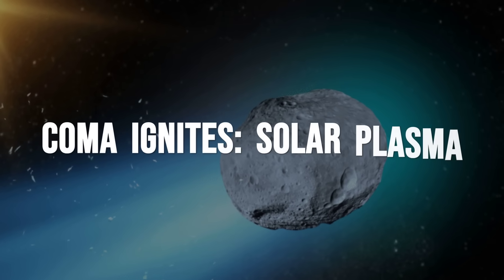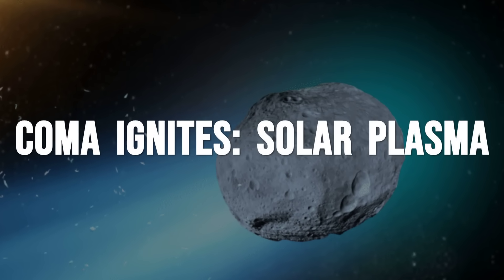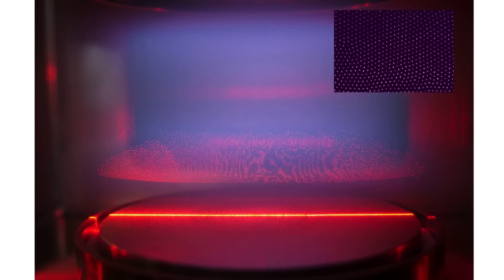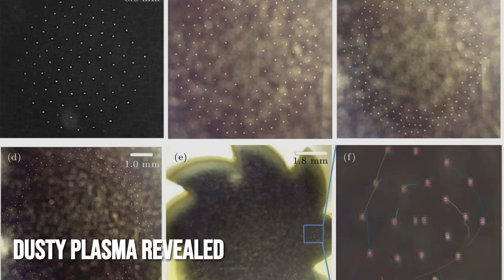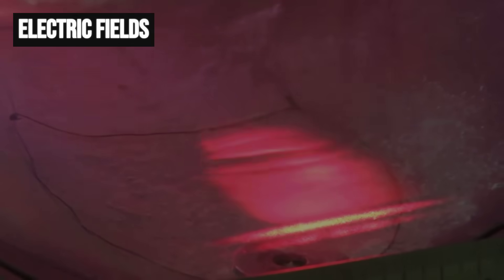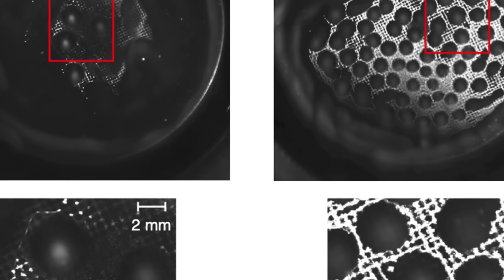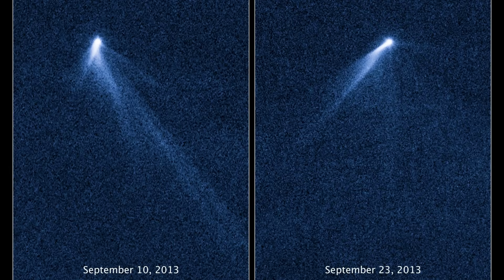As 3I-Atlas moves closer to the sun, its coma transforms from a cloud of dust and gas into a dynamic plasma environment. Sunlight and solar wind strip away molecules, mainly carbon dioxide, but also water and carbon monoxide, turning them into a mix of neutral gas ions and charged dust. This is what physicists call a dusty plasma, and it is not just a featureless haze. Inside, electric fields build up as grains and ions interact, setting off a chain reaction of filament formation, double layers, and sometimes even organized, almost crystalline patterns. These structures can reach thousands of kilometers in scale, shifting and reshaping as the solar wind fluctuates.